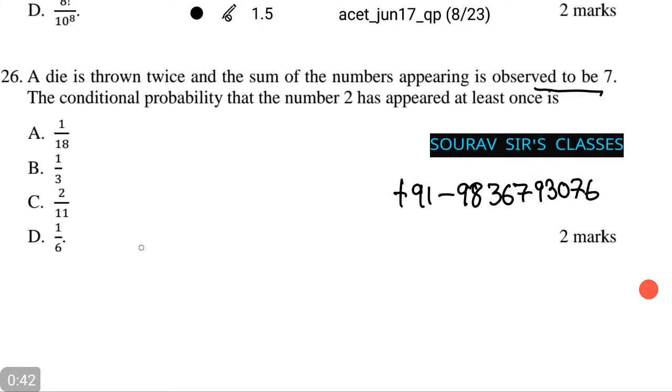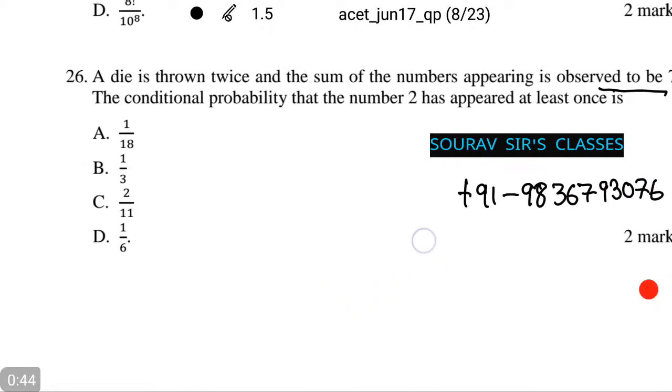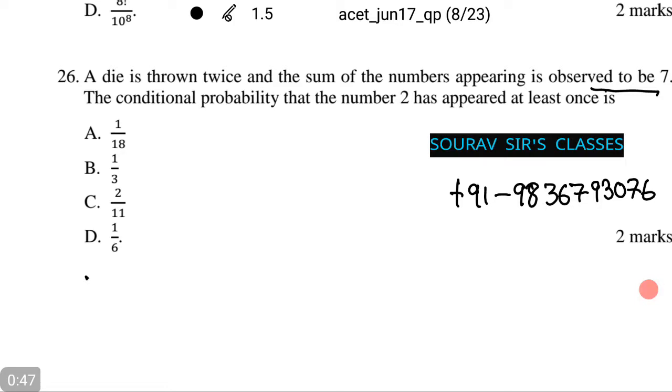Let us define a random variable X, which is the event that the sum is 7.